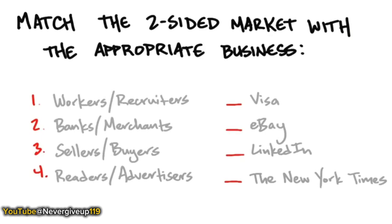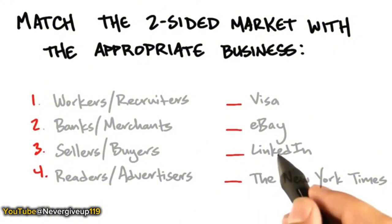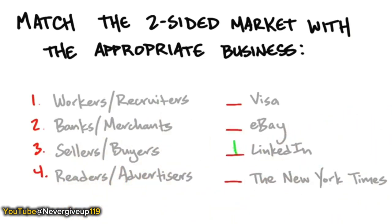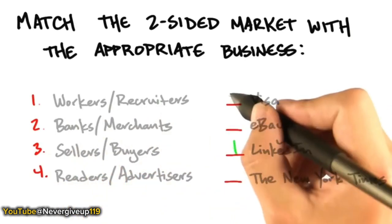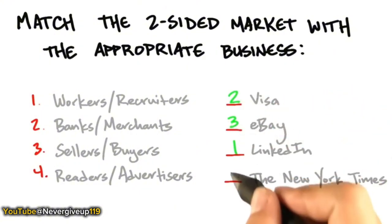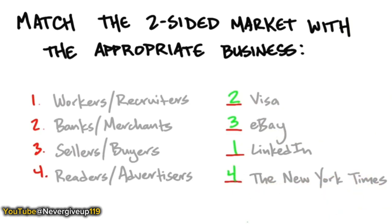Let's take a look at a two-sided market and match it with the appropriate business. For LinkedIn, there are two sides: workers as a customer segment, and recruiters. For Visa, you'd have banks and merchants. For eBay, you'd have sellers and buyers. The New York Times and almost every newspaper, radio, television, and Google have readers and advertisers. Understanding multi-sided markets is just understanding which customer segments use the product and which other customer segment pays.